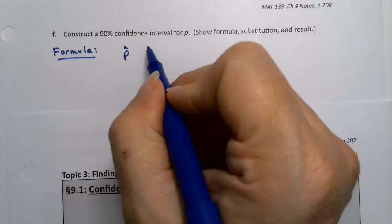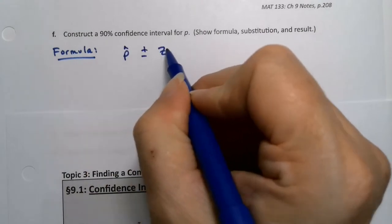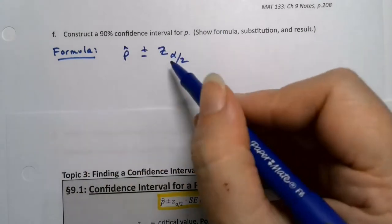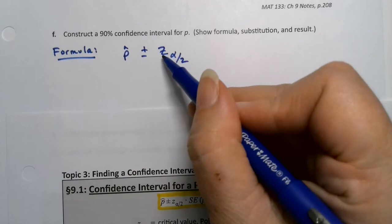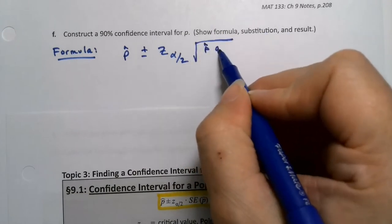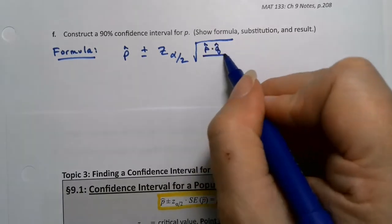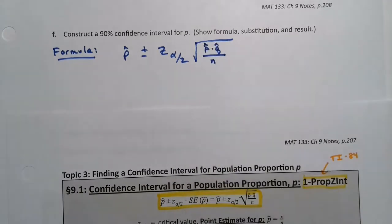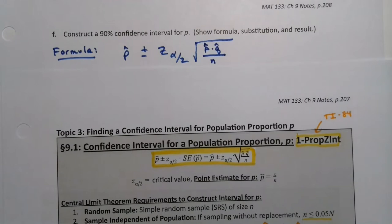So I'm going to write P hat plus or minus Z alpha over two. That's a subscript. You write it below the line, and then a big square root, P hat, Q hat, they're multiplied by the way, and divide by N. In math, we don't often show the dots, but I did here because I thought it would get confusing anyway, so they are multiplied by each other.